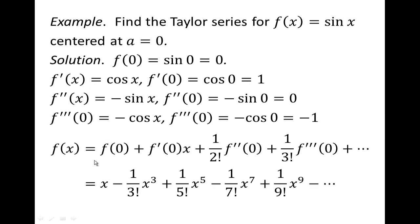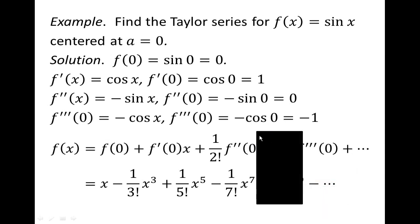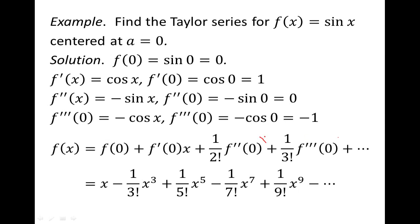The first derivative at zero was 1, giving x. The third derivative at zero was negative 1, so we subtract x³/3!. The fifth derivative gives positive 1, so we add x⁵/5!, and the seventh derivative gives negative 1, so we subtract x⁷/7!, and so forth. That's what the Taylor series for sine looks like.